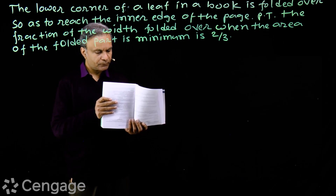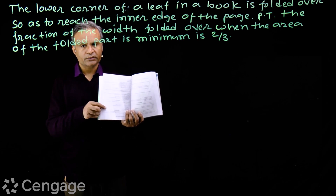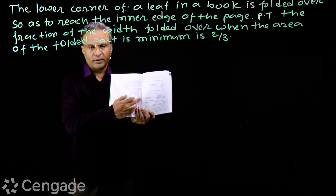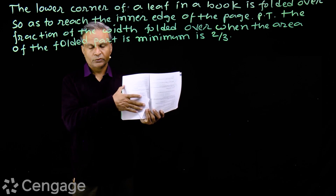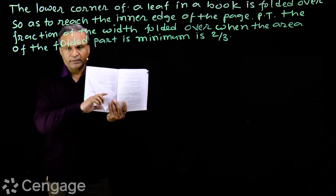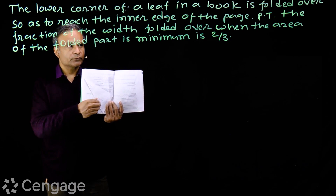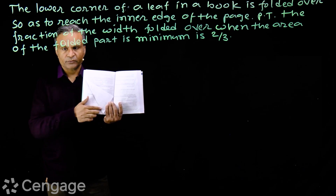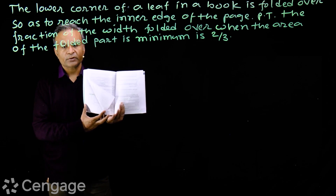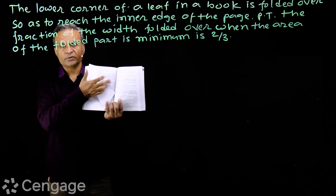Here I have one book, and this is one page or leaf of the book. This is the lower corner of the page. Now this corner is folded over so that it reaches the inner edge — where there is a binding. This is the folded part; it is a triangle. This is the folded width. We have to prove that when the area of this folded triangle is minimum, the folded width is two-thirds of the actual width.